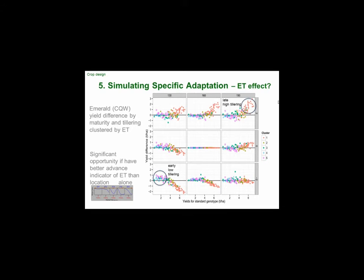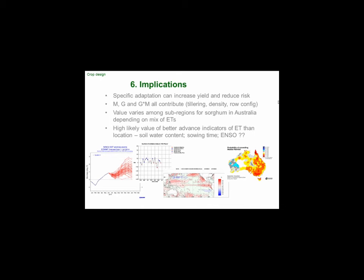The significant opportunity is if you have a better advance indicator of the environment type than just where you are. Knowing your location gives some advantage because your environment type mix will be different at Emerald, Goondiwindi or Moree. But it may be a lot better if you know more than that. The implication is that we can increase yield and reduce risk with specific adaptation — all of these factors contribute — but the value varies among sub-regions depending on the mix of environment types you're confronted with. If you could predict what environment type you were going into, you could do something a whole lot better.